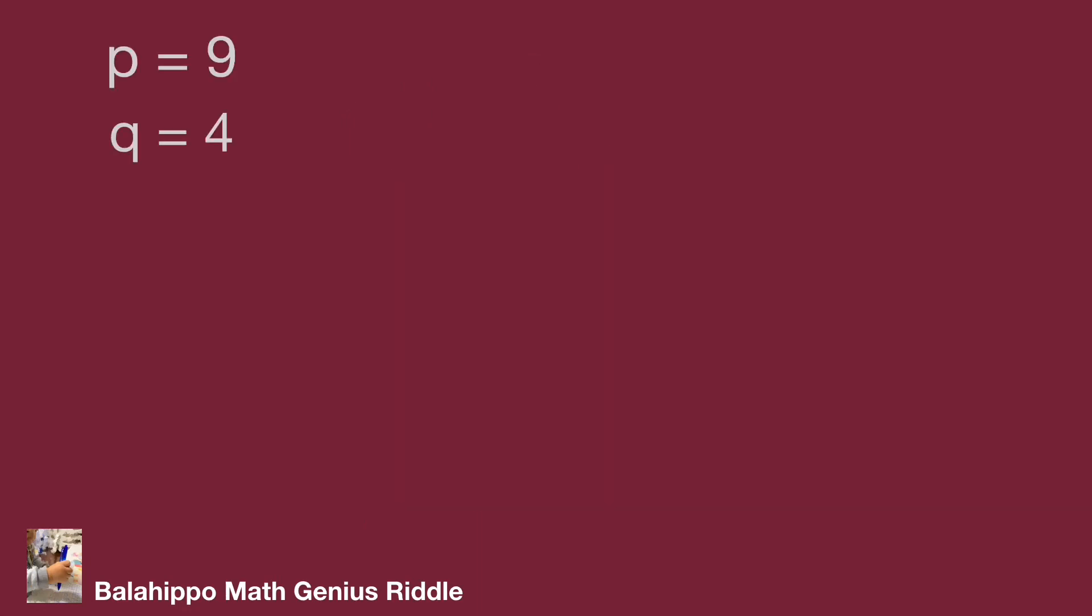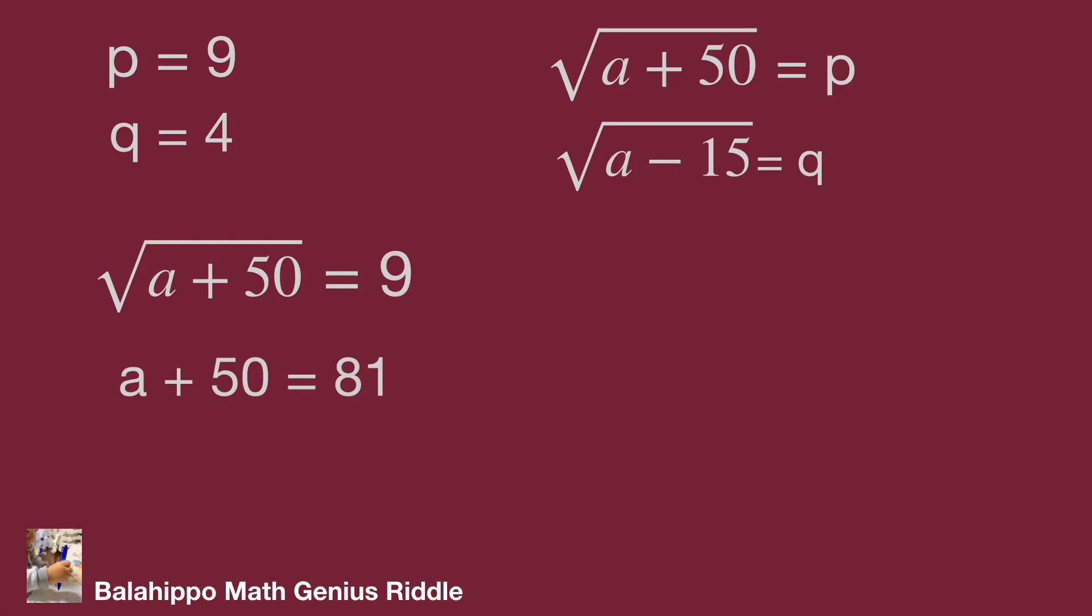At the beginning, we defined square root of a plus 50 equal to p and square root of a minus 15 equal to q. Substitute p by 9. We can get square root of a plus 50 equals 9, square both sides. Then a plus 50 equals 81, a equals 31.